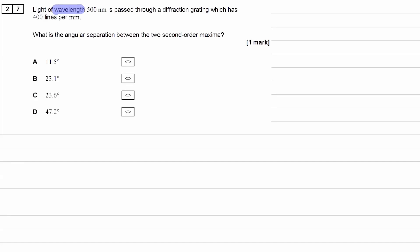Light of wavelength 500 nanometers is passed through a diffraction grating which has 400 lines per millimeter. We want to work out the angular separation between the two second order maxima.